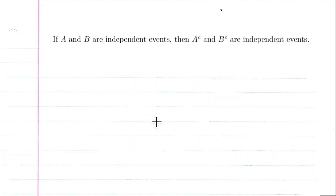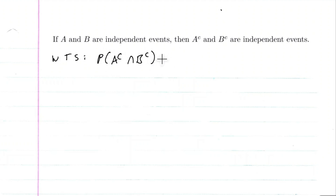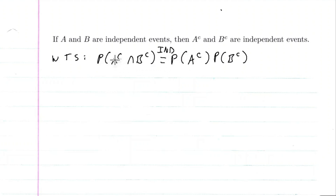We want to prove that if A and B are independent events, then A complement and B complement are independent events as well. This is what we want to show: the probability of A complement intersection B complement is equal to the probability of A complement times the probability of B complement. That's what it means for two events to be independent — the probability of their intersection equals the product of their individual probabilities.